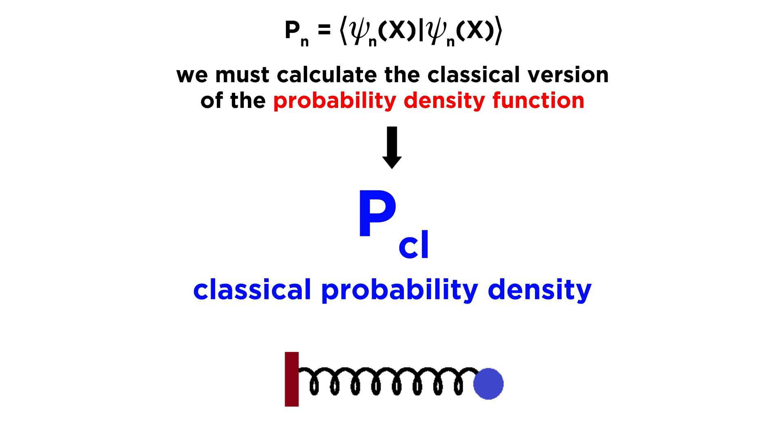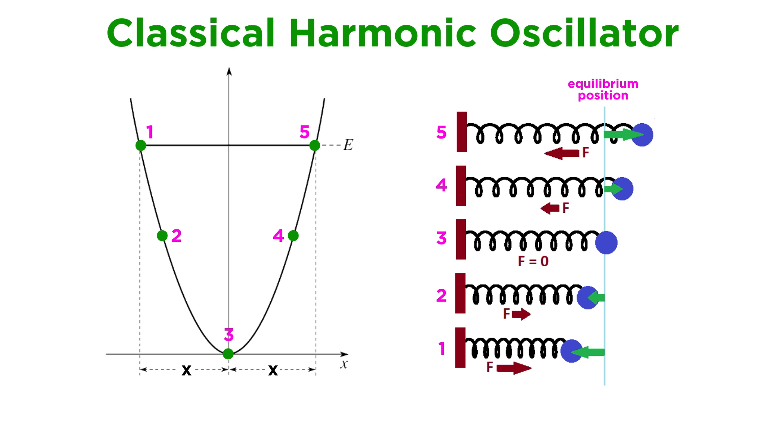To intuitively grasp the results that we are about to find, let's think about how a classical particle behaves in a harmonic oscillator. If we imagine a ball in a harmonic trap, so to speak, as we have done before, there are several results that we already know about from simple classical mechanics. First, there exist two turning points.